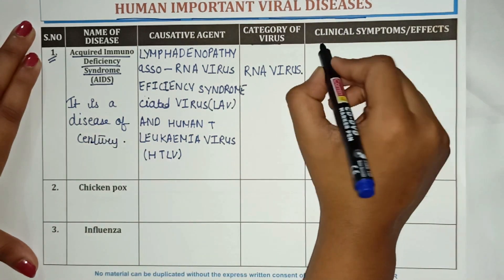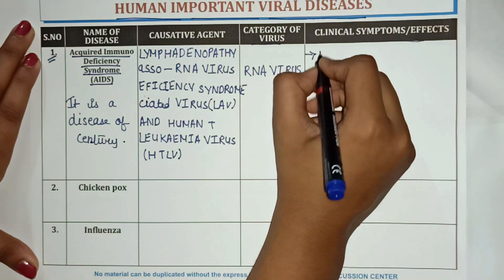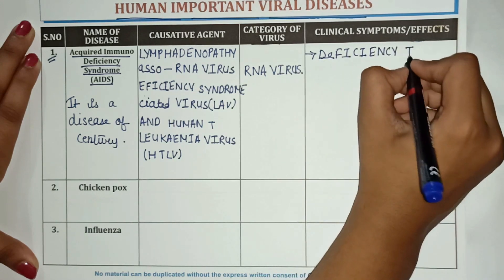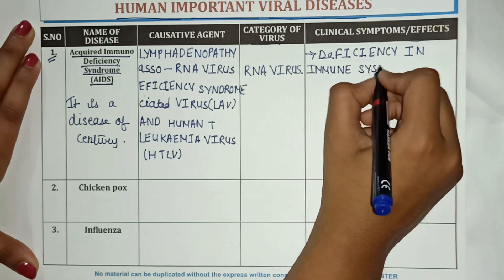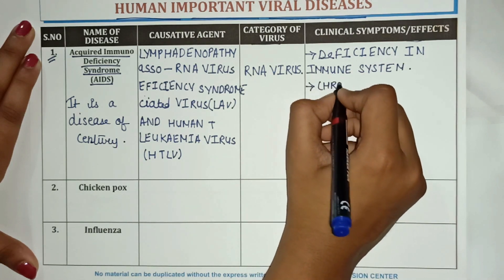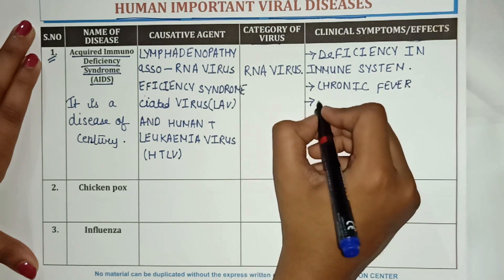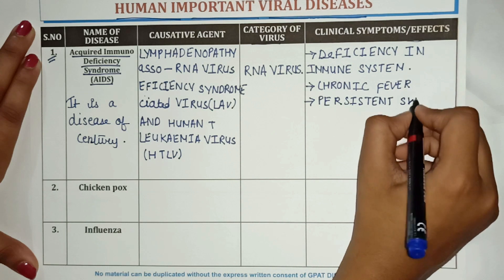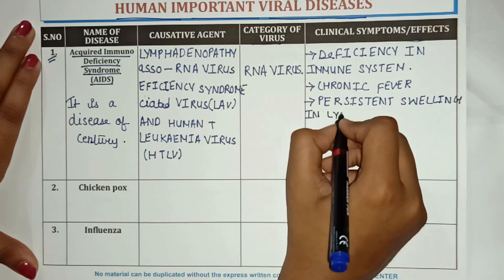The clinical symptoms and effects related to AIDS are: it causes deficiency in the immune system, chronic fever, and persistent swelling of lymphatic ganglions.